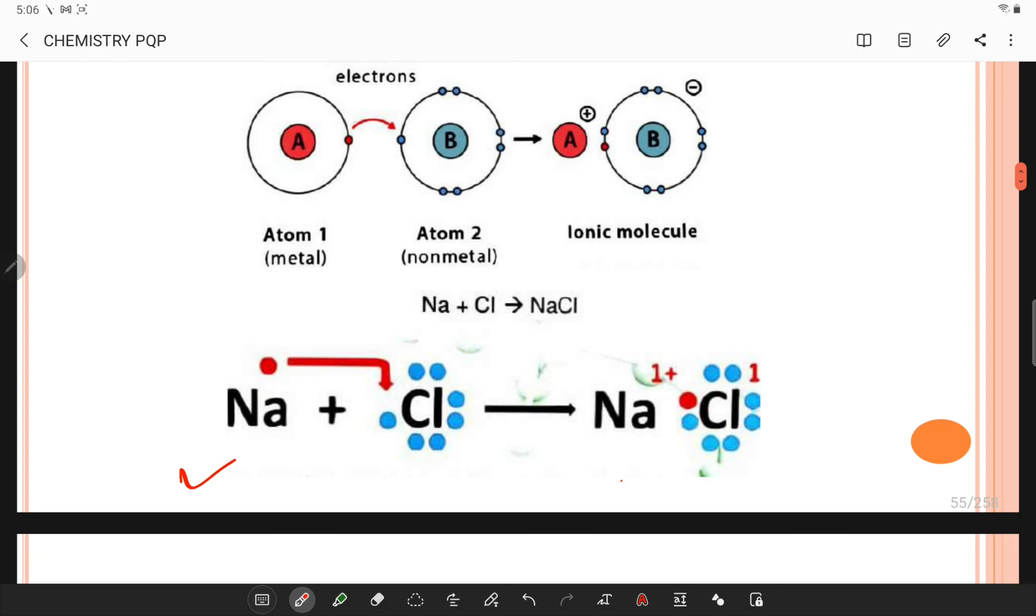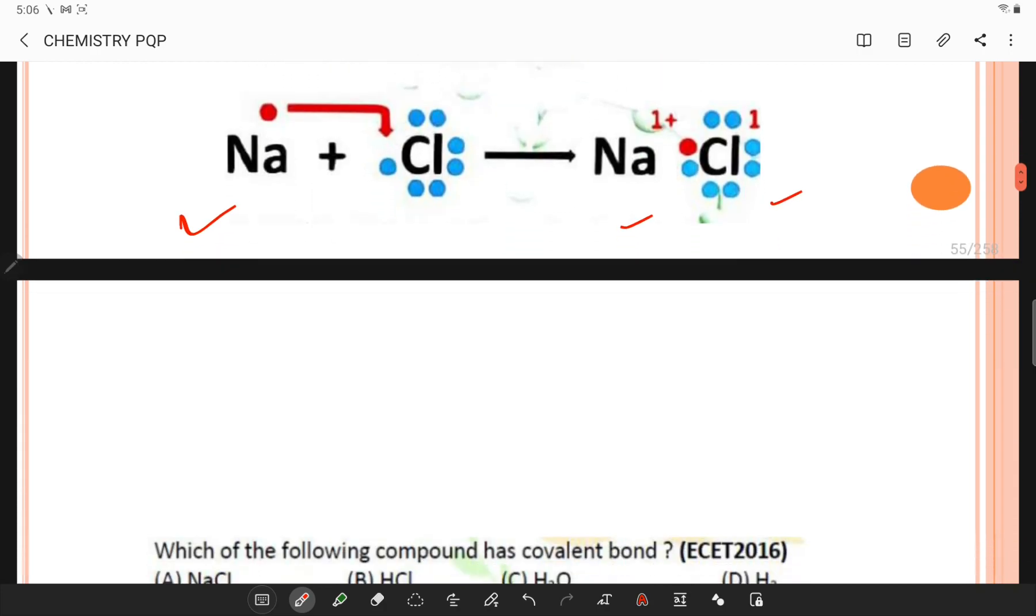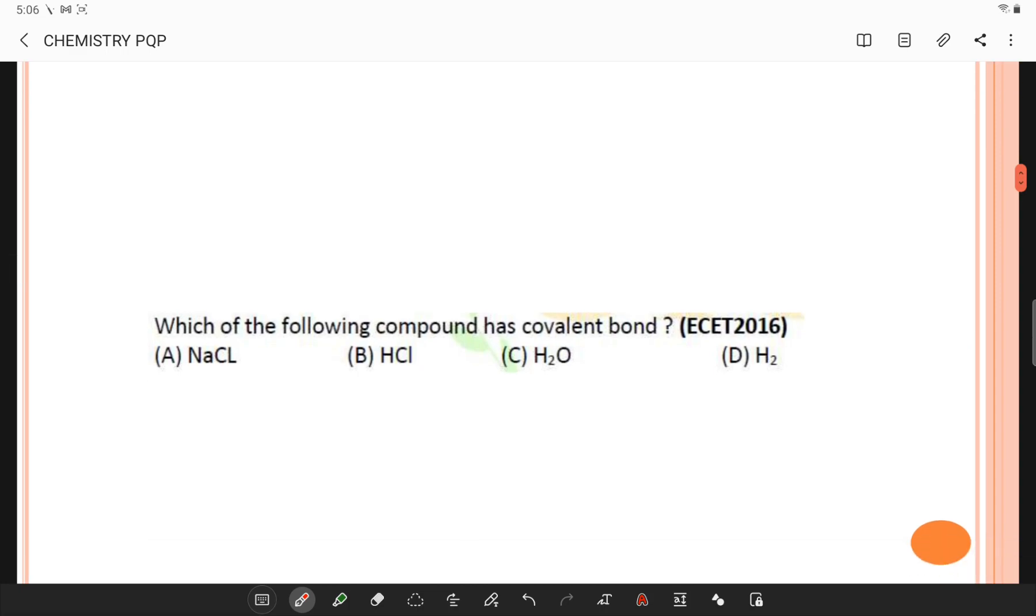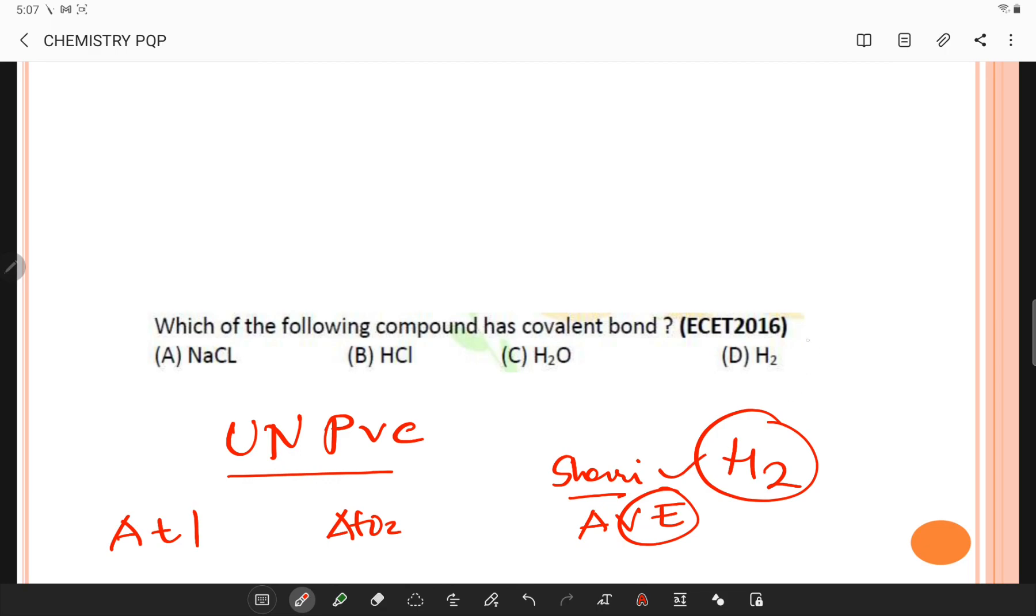Which one of the following compound has a covalent bond? Covalent bond is basically present in hydrogen where unpaired valence electrons from atom one are joined with atom two, and here the concept of sharing of available valence electrons comes into picture.